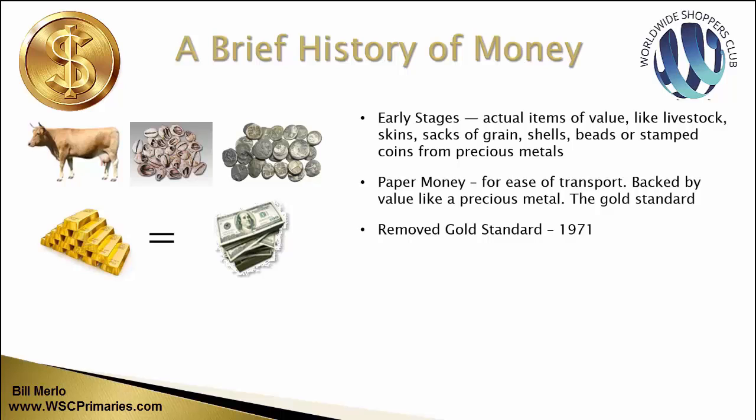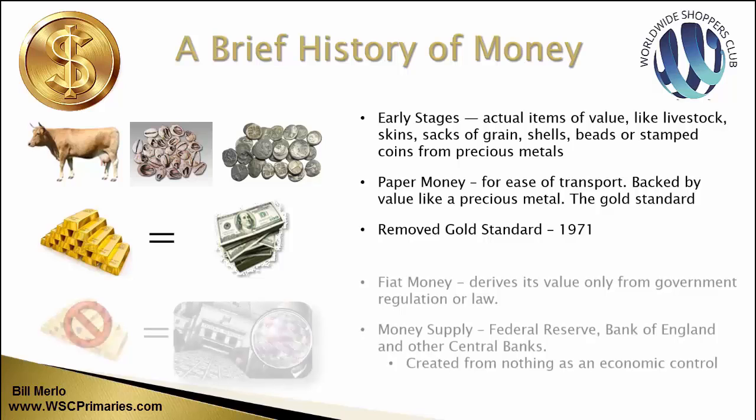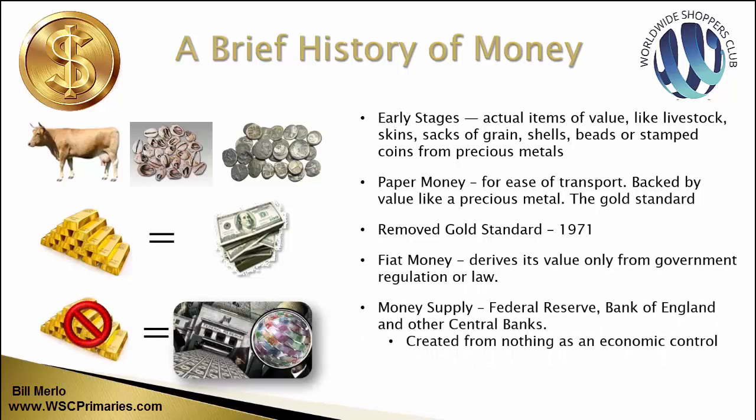But in 1971, they removed all that about backing money with anything, and now what we have is fiat money. What that means is that it derives its value only from the government or regulation of law. Now the money supply is regulated by things like the Federal Reserve, the Bank of England, or other central banks around the world. Basically, the money is created from nothing, and it is a way of controlling the economy.